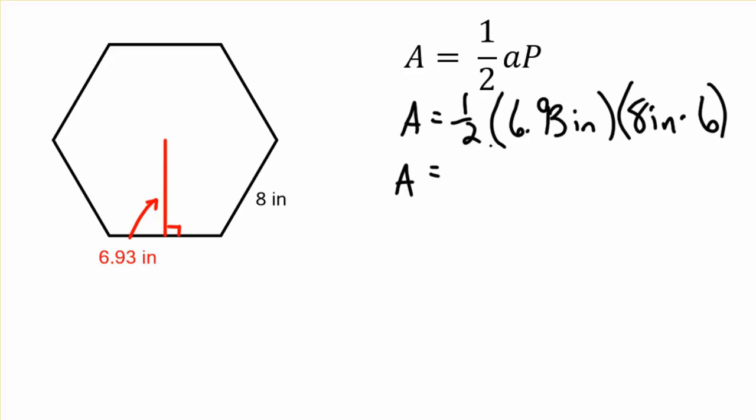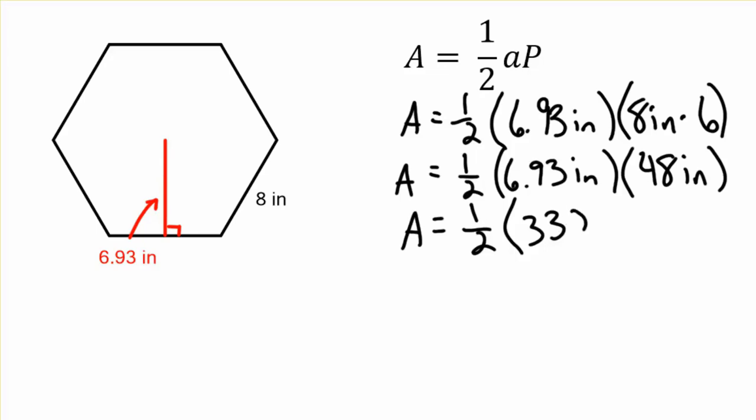So now we have one-half of 6.93 inches, and our 8 inches times 6 is going to give us our perimeter, which is 48 inches. So we're going to keep that one-half this time. Let's go ahead and multiply these two together in our calculator. It gives you 332.64, and inches times inches is inches squared.